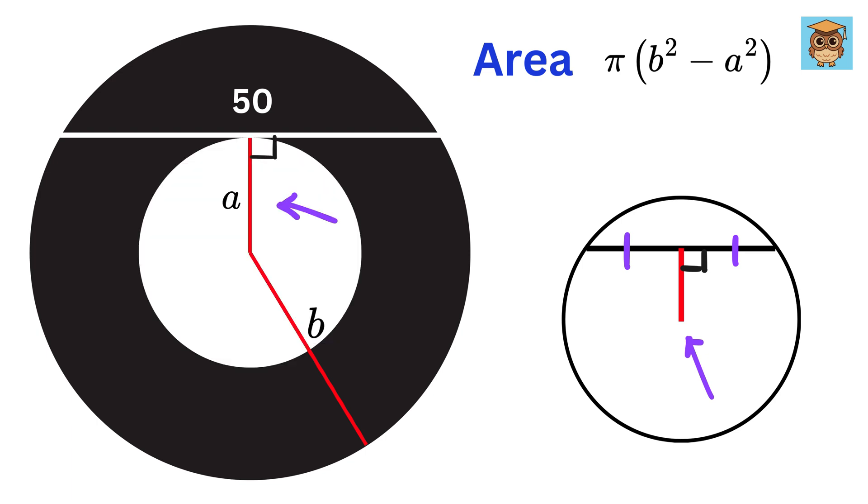So, the radius of this inner circle will divide this line into two equal parts. Thus, this length will be 25 centimeters.